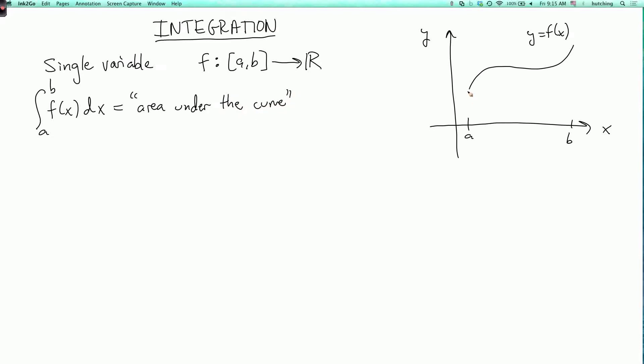So that's only literally true if the function is positive, as I've drawn it in this example. If the function is negative, then for the parts where the graph goes below the x-axis, you'll have to subtract the areas of the regions bounded by those parts of the graph. Anyway, let's just look at the case where f is positive.